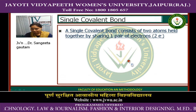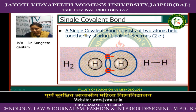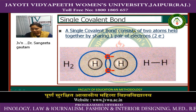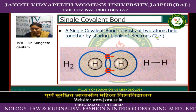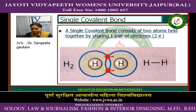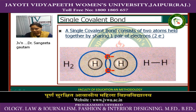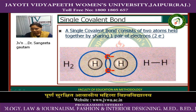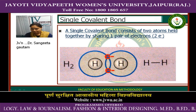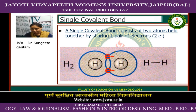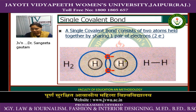A single covalent bond consists of two atoms held together by sharing one pair of electrons. Each atom gives one electron, and between these two atoms two electrons are shared. So a single bond is formed by sharing two electrons between two atoms.